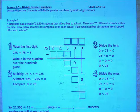Step one is to place the first digit. We know that 225 divided by 75 equals 3. So we're going to write 3 in the quotient over the hundreds place.